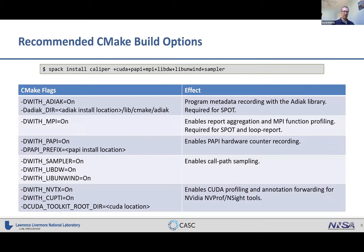There are a few recommended build options for Caliper. The ADIAC library is required for Spot and allows recording program metadata. You also need to enable MPI support for using Spot with Caliper — your program doesn't have to be an MPI program, but Caliper needs to be built with MPI support. Additional options enable hardware counters, sampling, and CUDA support. Spack makes most of these options on by default.